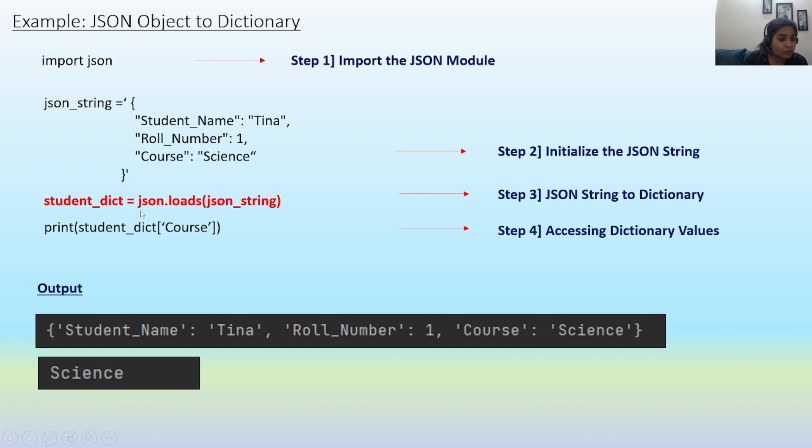So student_dict equals json.loads(json_string). In this step, the JSON data is now already stored into the dictionary. Here is the output which you can see. If we print the student dictionary, we will be getting this output.